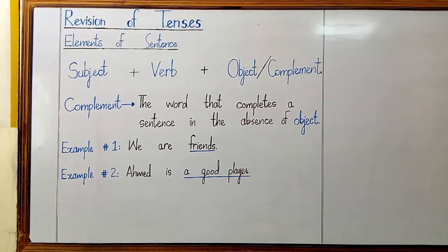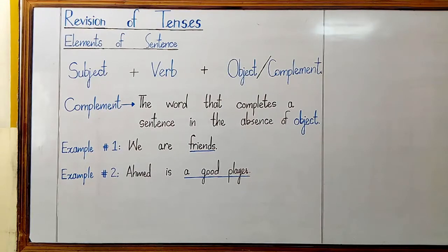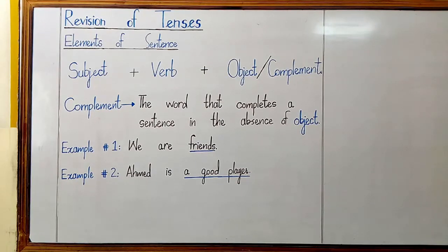I hope so far you have understood the elements of a sentence under the heading of revision of tenses. My brothers, it was important to revise these elements because you will need subject, verb, and object to make a sentence in all 12 tenses. Now we will move on to the second part of revision of tenses, where I will draw a chart on the board showing all 12 tenses and which auxiliary verb and main verb we use in each. Till then, take care of yourselves — Assalamu alaikum wa rahmatullahi wa barakatuh.